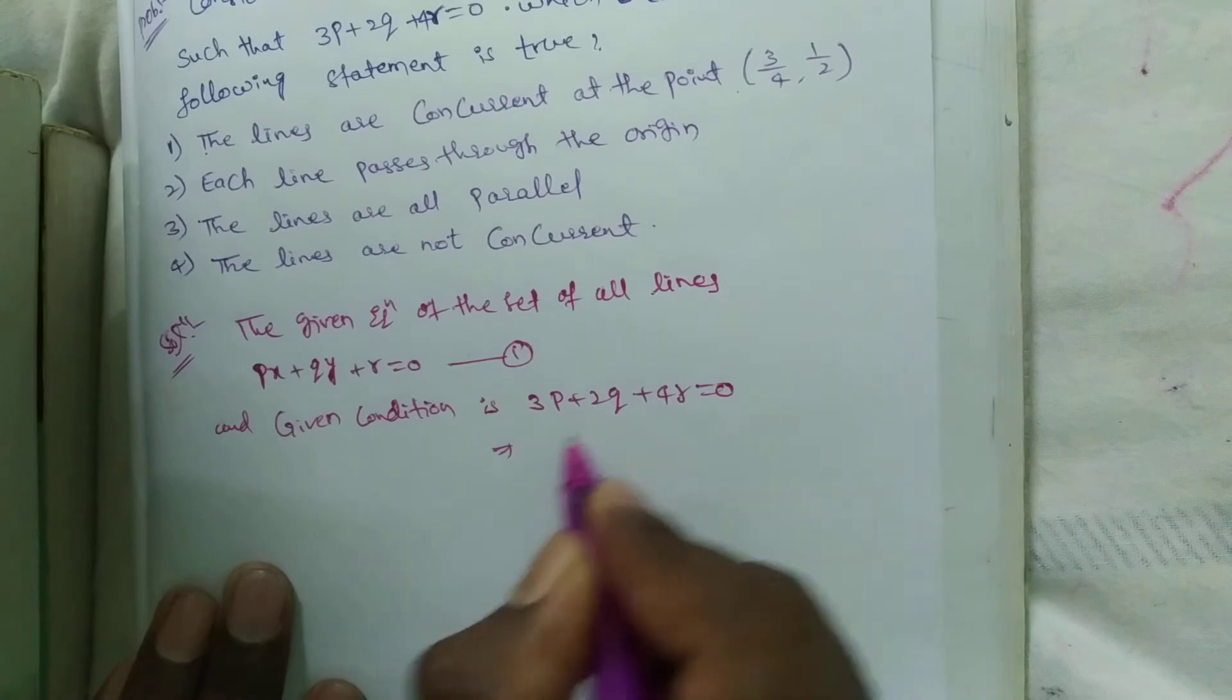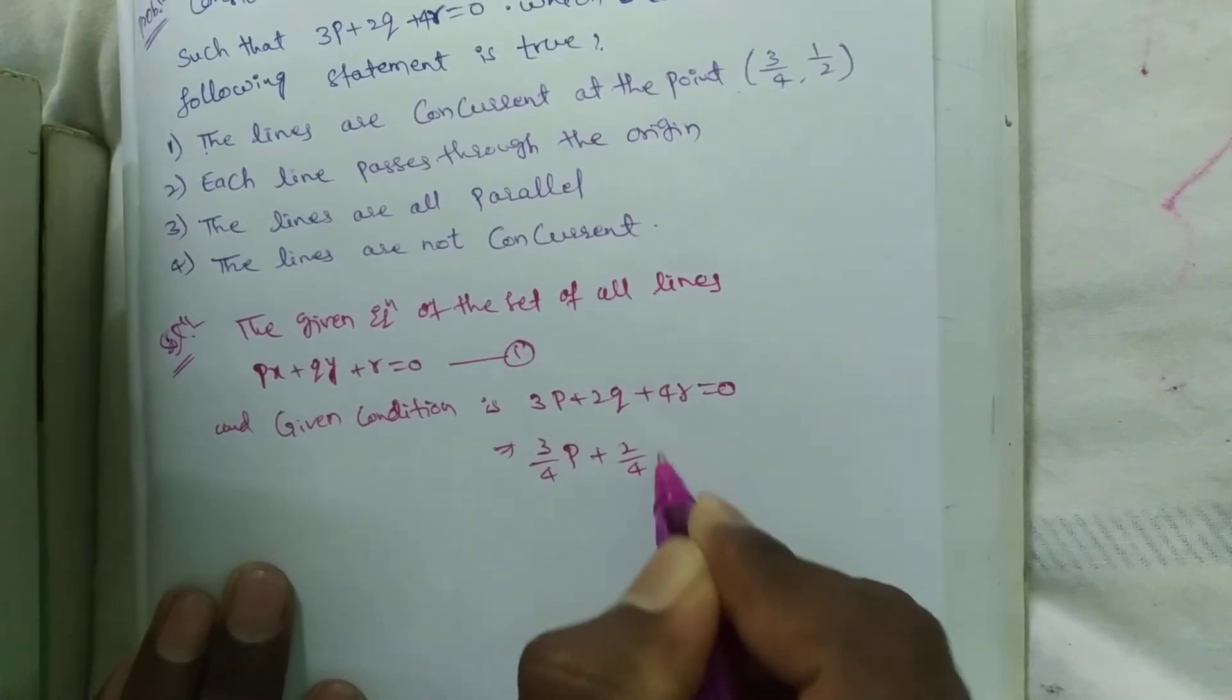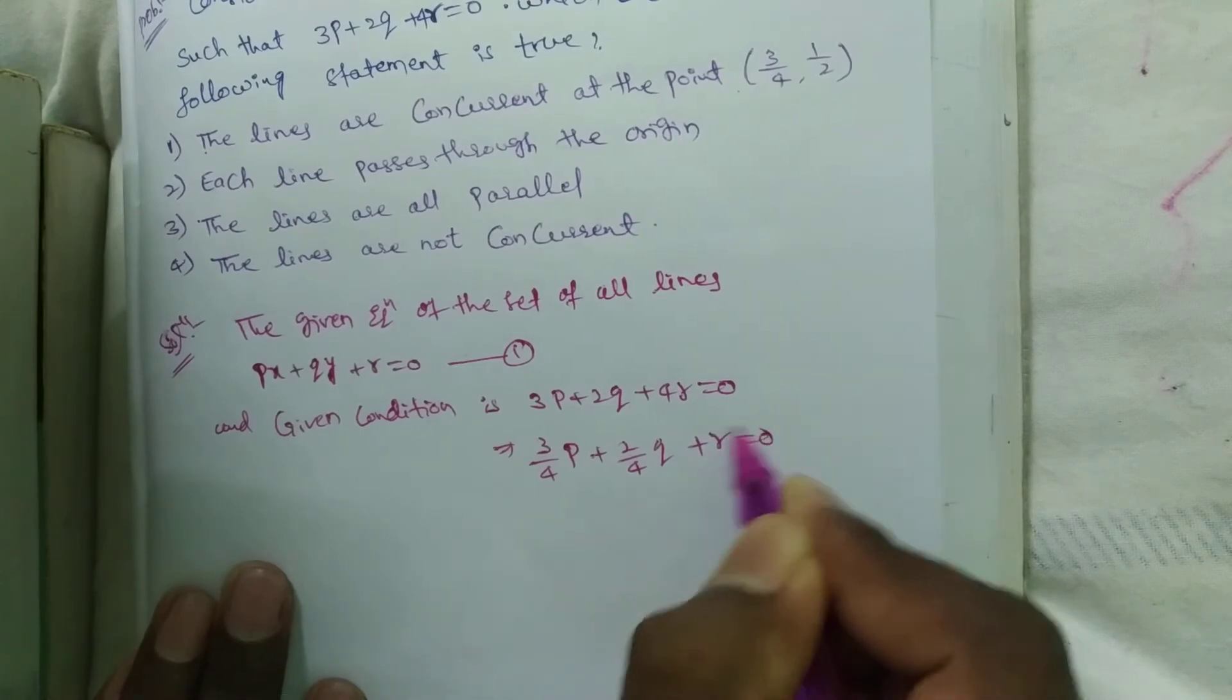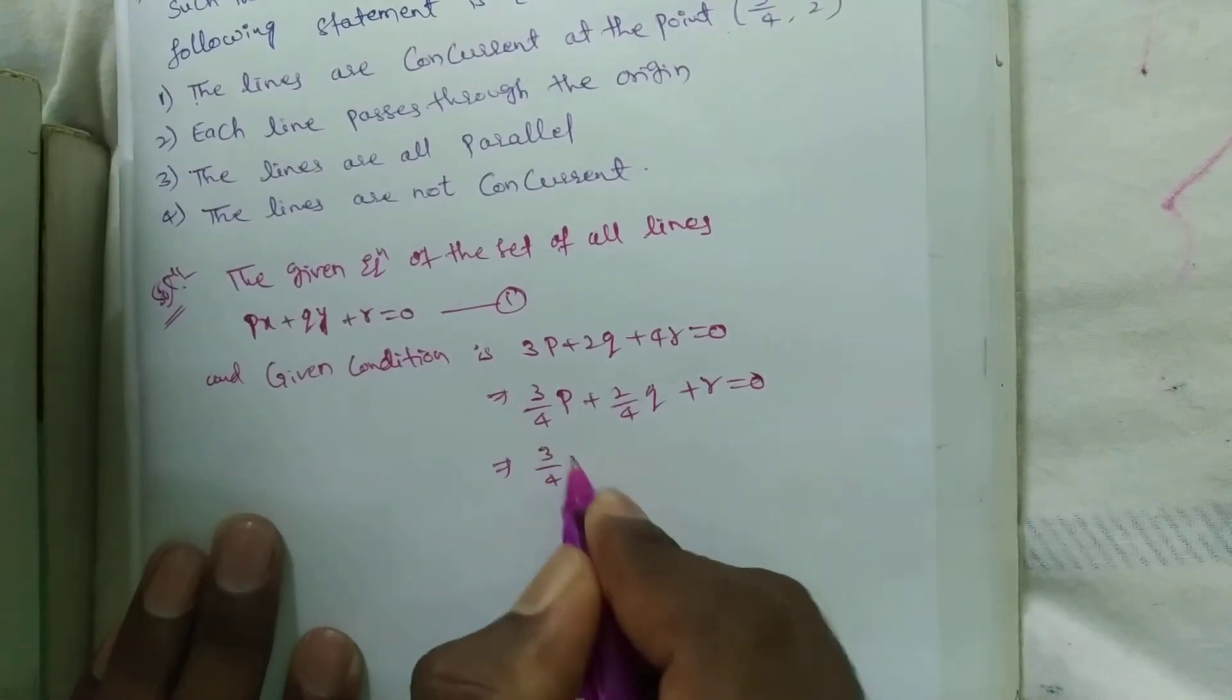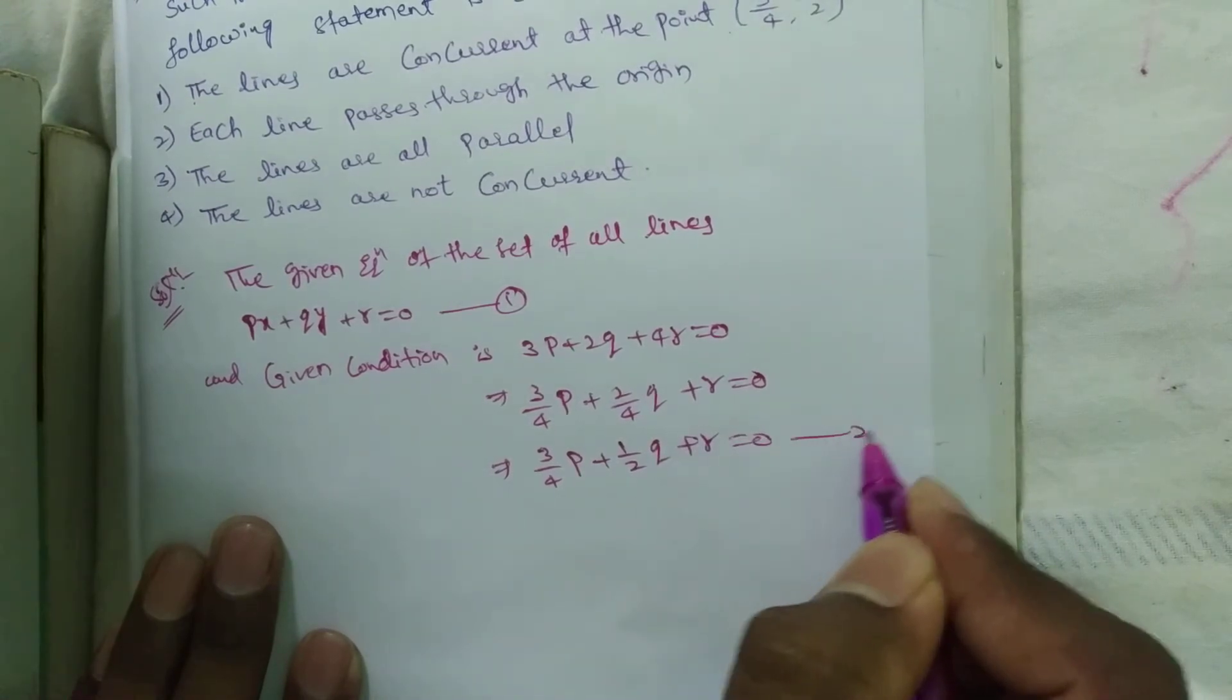Now divide by 4 here. 3 by 4p plus 2 by 4q plus r equal to 0. That implies 3 by 4p plus 1 by 2q plus r equal to 0, equation number 2.